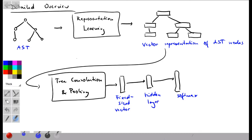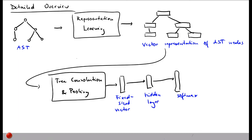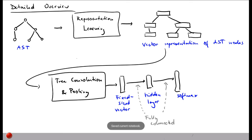In contrast to the tree convolution itself, the connections from the fixed-size vector to the hidden layer and from the hidden layer to the final output layer are fully connected — every neuron is connected to every other neuron. This is fine in terms of computational complexity simply because the potentially very complex AST has already been summarized into a fixed-size vector.